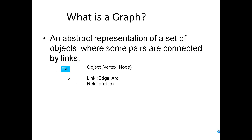So what is a graph? It's an abstract representation of a set of objects where some paths are connected by links. You have an object which has coordinates like a vertex and node. You have a link which is an edge, arc, and then there's a relationship.